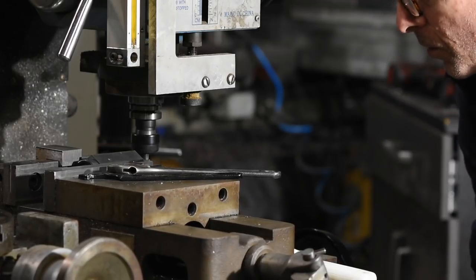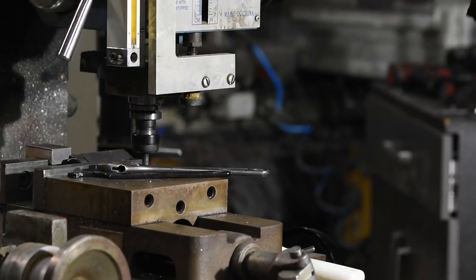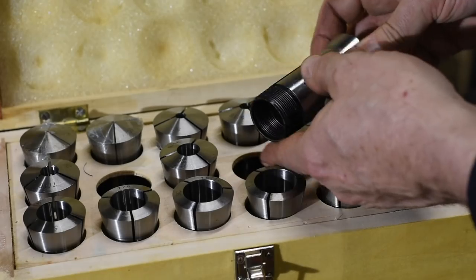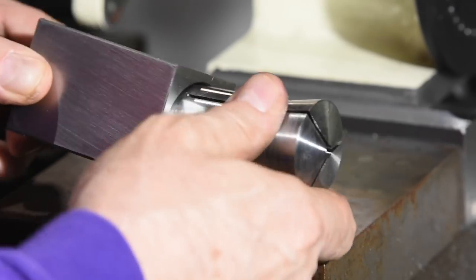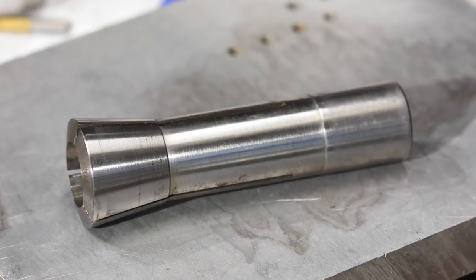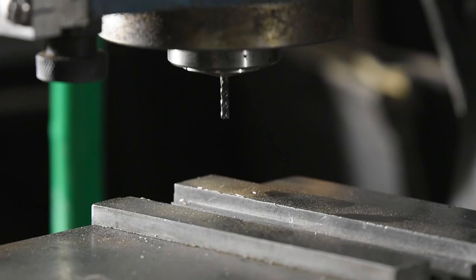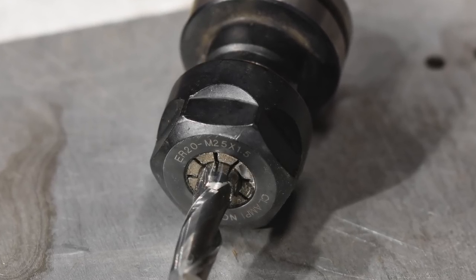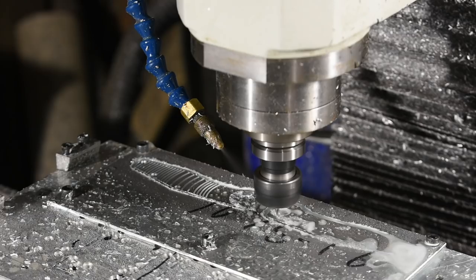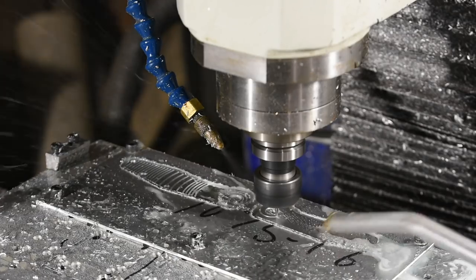There are tons of different kinds of collets, but here are probably the most common ones in the knife maker's shop. The 5C is used in a ton of different applications, some of which I'll show you in a minute. The R8 is typically used in vertical mills to hold tools, end mills being the most obvious tool of choice there. ER collets are typically used in CNC mills to hold tools, though they're also attached to morse tapers to hold drills and just all kinds of other things.